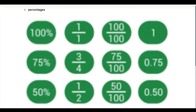Now we move to percentage. This shows how we can express from fraction to decimal, and from decimal to percentage. If you have 100 over 100, that is 1 — because 100 goes into 100 one time. When expressing this as a percentage, it is 100 percent with no remainder.